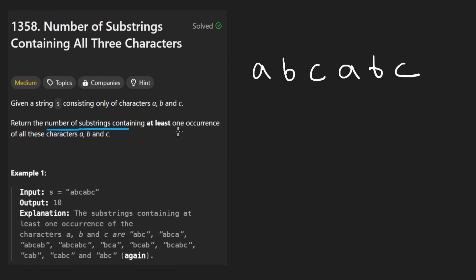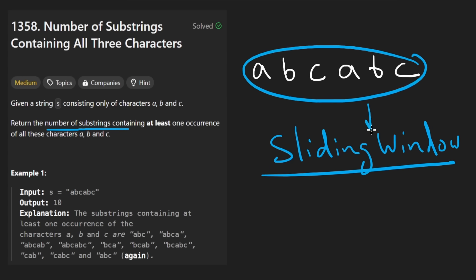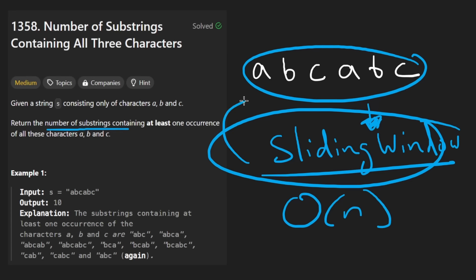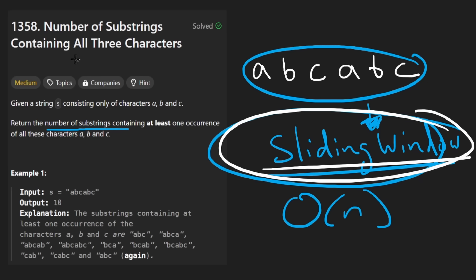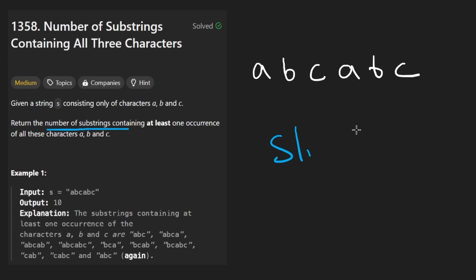Another thing: since we're dealing with substrings, my intuition says to try the sliding window pattern first. Can I find a solution that fits this pattern? I know the sliding window typically runs in linear time. If you're not familiar with this pattern, you probably wouldn't immediately recognize that — that's why I created NeetCode.io. Now thinking along those lines, starting from the left I'm going to keep expanding my window, because I'm looking for at least one occurrence of A, B, and C. I'll use a hash map to count the characters in my current window.